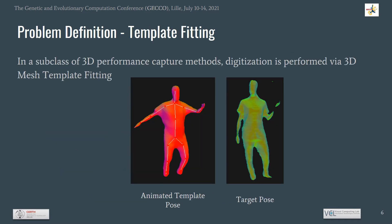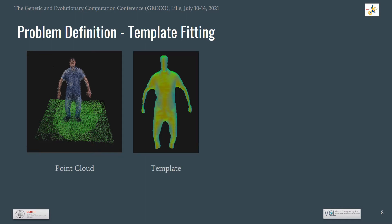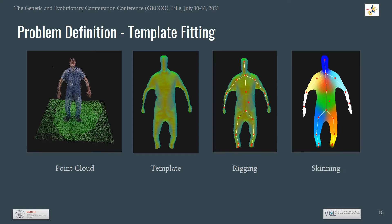In a subclass of 3D performance capture methods, 3D digitization of the performance is performed via 3D mesh template fitting. The performer is initially captured in a neutral pose like an A or T pose. Subsequently, a 3D mesh called template mesh is constructed from the acquired point cloud. A human skeleton is embedded inside the template mesh in a process called skeleton rigging, and finally all mesh vertices are associated with skeleton bones in a process called skinning.